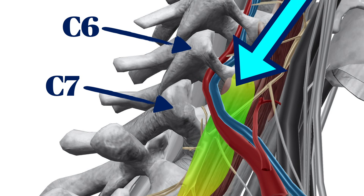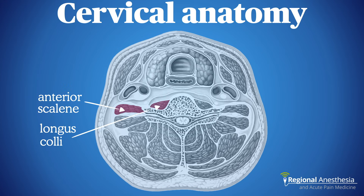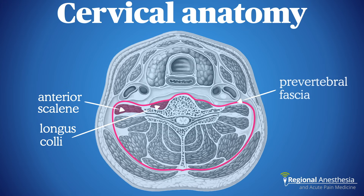The position of the vertebral arteries is somewhat protected at C6, and you're just that much further away from the lung. In cross-section of the neck, we see both the anterior scalene and the longus colli muscle attached to the transverse process. Binding these muscles to the vertebra is the prevertebral fascia; most anatomy books will also distinguish the alar fascia, although clinically the space between them is only a potential one.